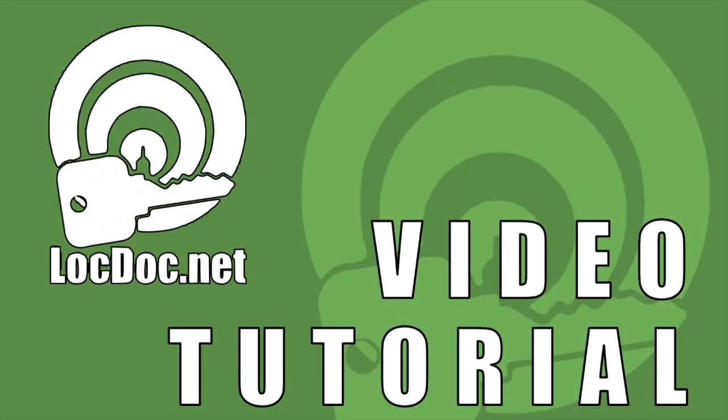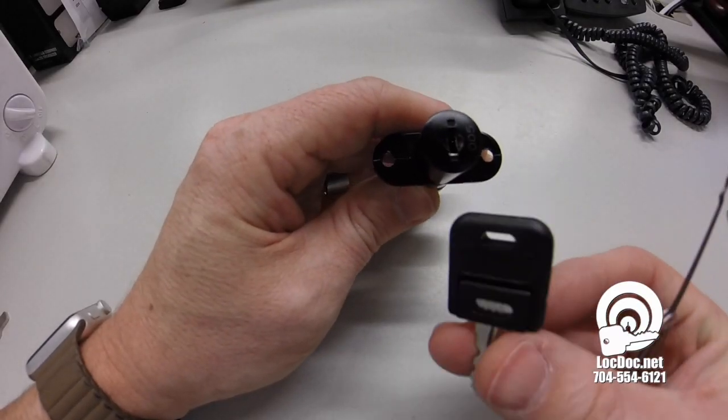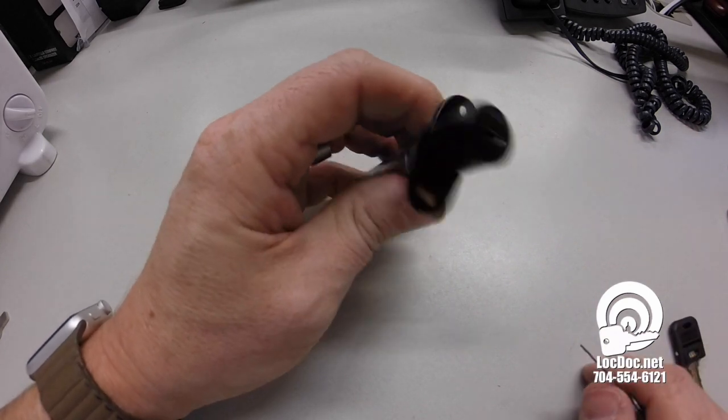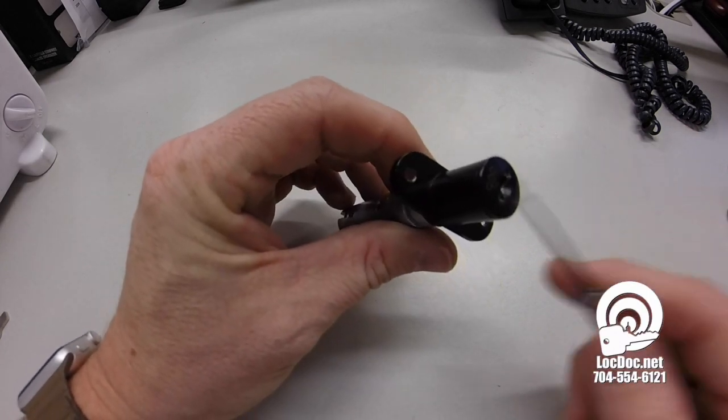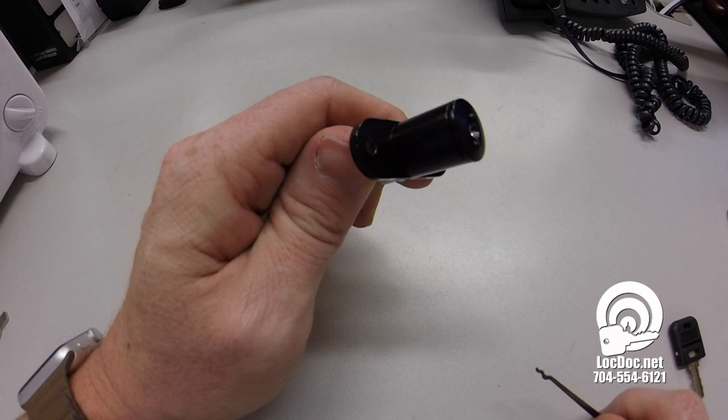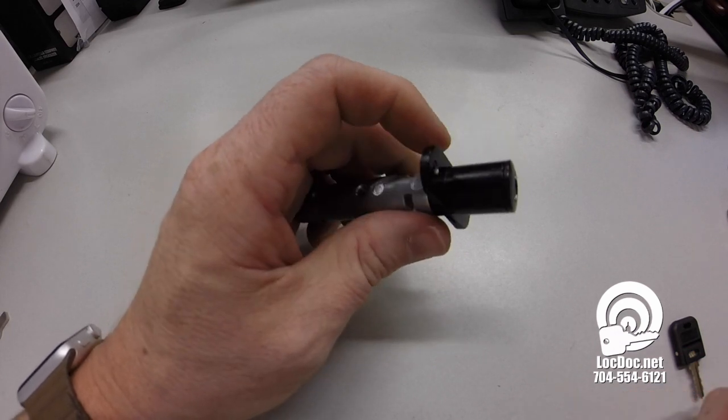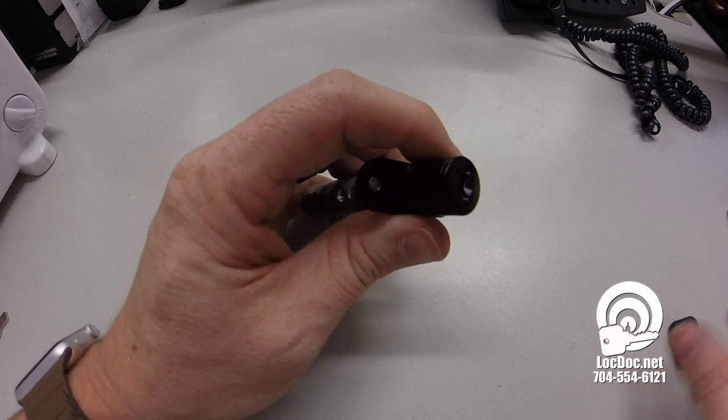All right guys, quick video tutorial for you. This is a Kimball file cabinet plug, and the question is how do we remove this plug from the lock to service it or replace it, whatever the case may be.